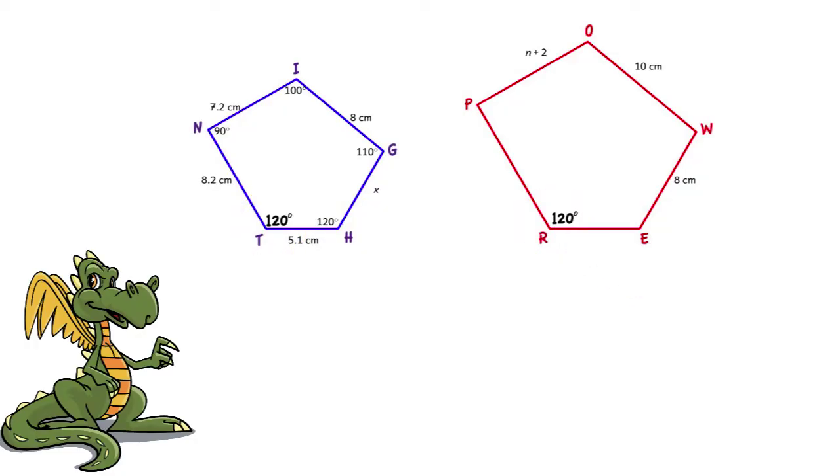We also notice that side IG corresponds to side OW. So what is the similarity ratio of knight to power? Side IG is 8 centimeters, and side OW is 10 centimeters. So the ratio is 8 to 10, which simplifies to 4 to 5.